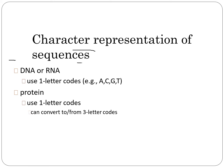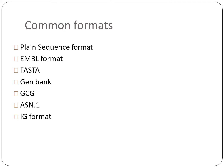For character representation, DNA and RNA use a one-letter code — A, C, G, T — and the same is true for proteins, which also use a one-letter code that can be converted to or from three-letter codes to differentiate amino acids.